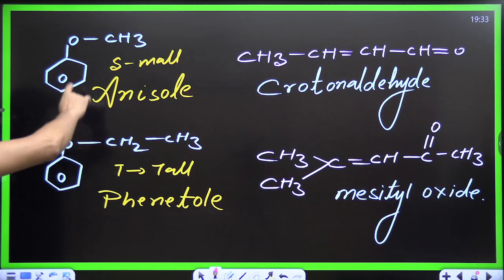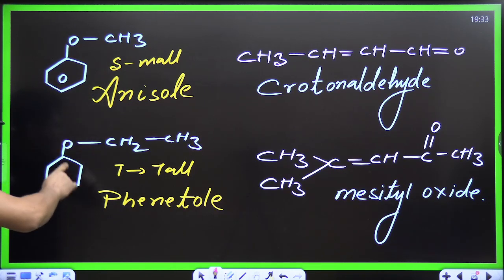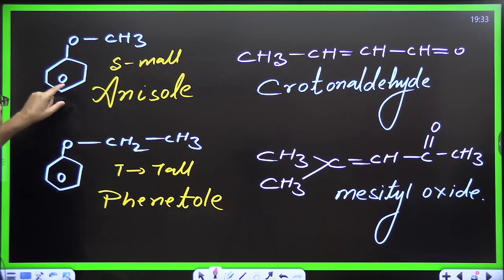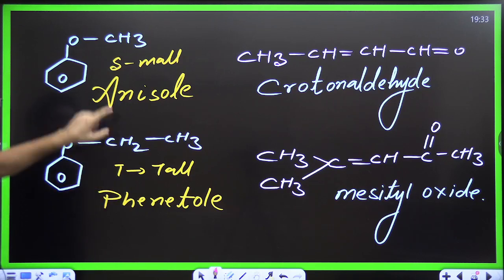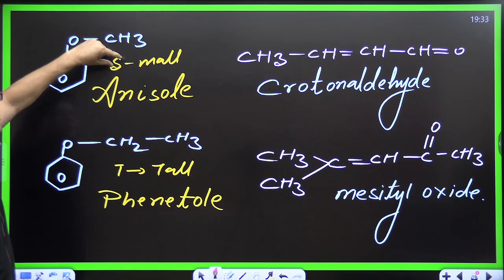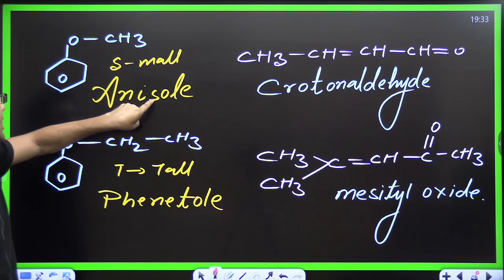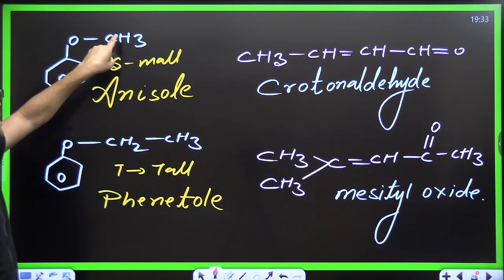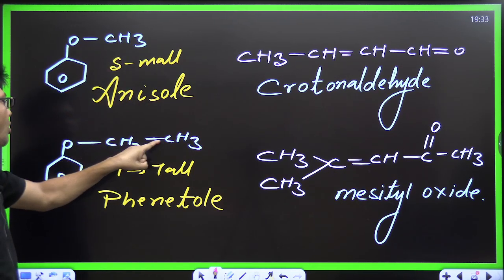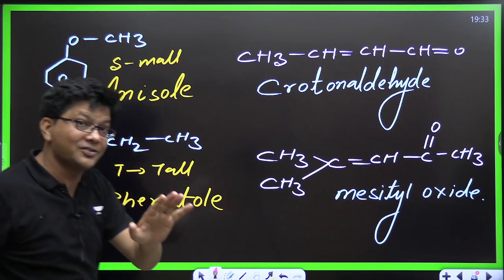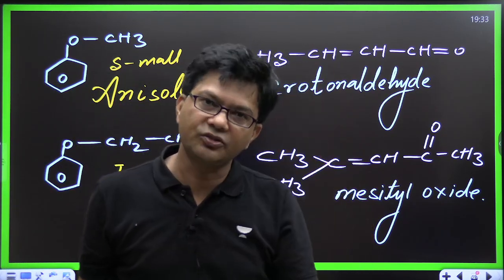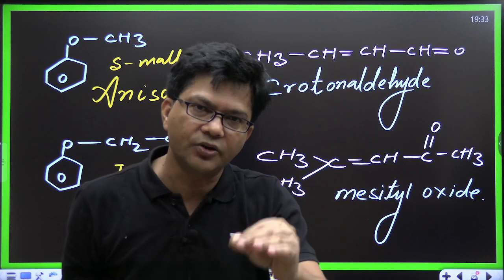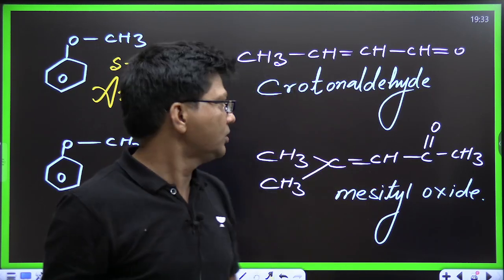These two compounds hold a lot of weightage. How to remember: this is anisole (methoxy group — methyl is small, so anisole — 'S' for small). And this is phenetole (ethoxy group — ethyl is tall, so phenetole). Anisole and phenetole — really very, very important.